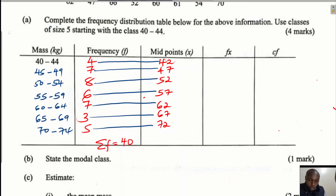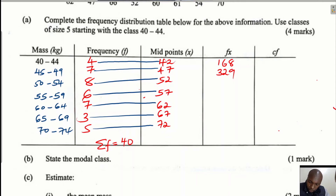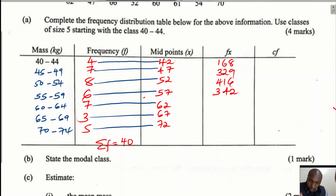Calculating fx for each class using a calculator: 4 × 42 = 168; 7 × 47 = 329; 8 × 52 = 416; 6 × 57 = 342; 7 × 62 = 434; 3 × 67 = 201; and 5 × 72 = 360.